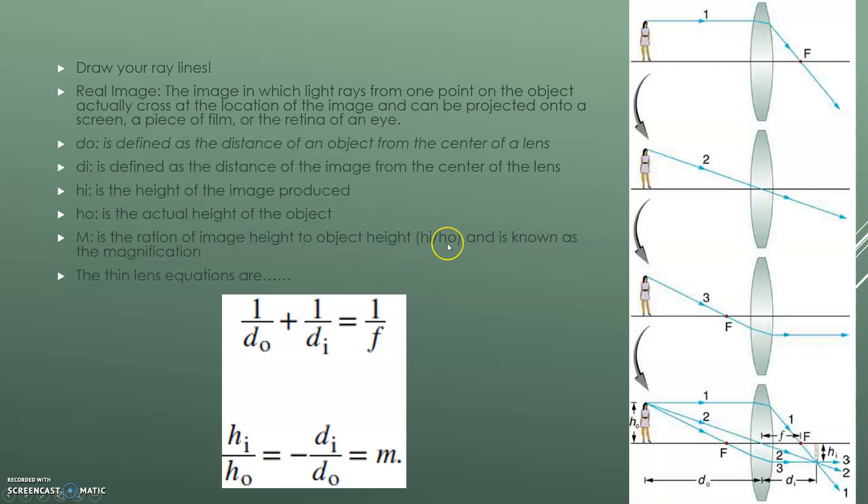And M is the ratio of image height to object height and is known as magnification. So HI divided by HO gives you the magnification. So we have two thin lens equations that we learned in class and that I'm showing here. And you can use those to find the magnification or if you're given a subset, you can solve for the other. And there's many problems in which you'll be able to use this and apply this.